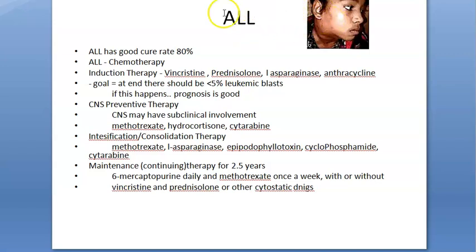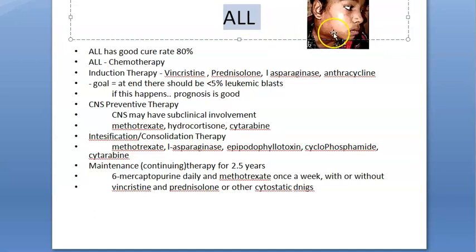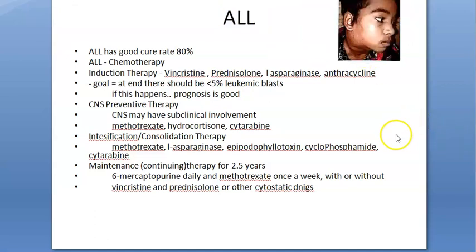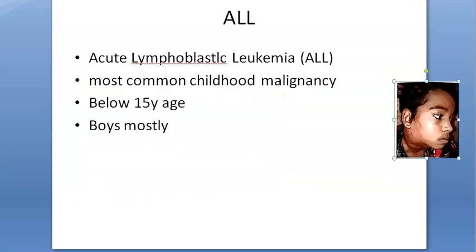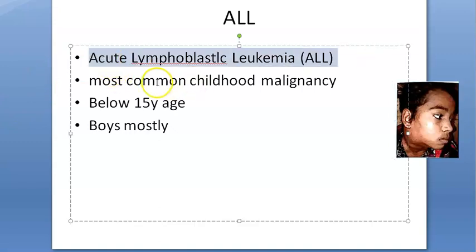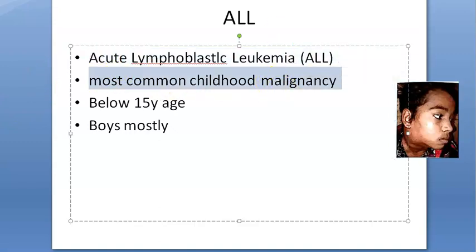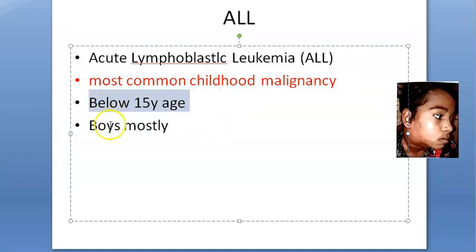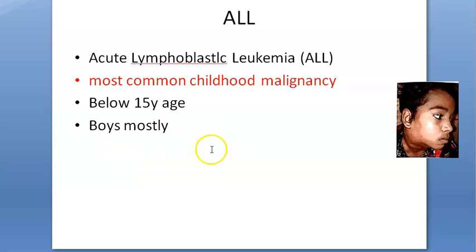In this video we want to look at the treatment for acute lymphoblastic leukemia which affects children. This is a paediatrics topic. Let's first take a recap of ALL and then come to the treatment. ALL is acute lymphoblastic leukemia — it's the most common childhood malignancy, predominantly affecting children below 15 years of age, mostly boys but girls also.